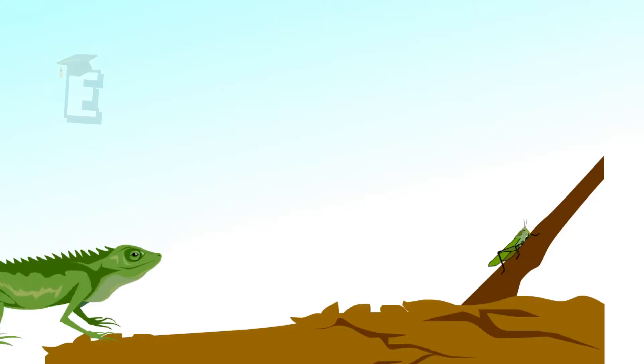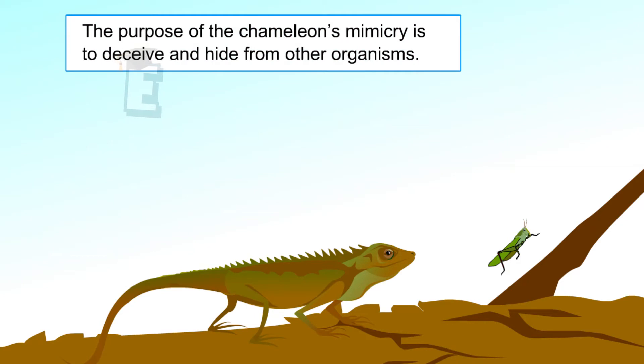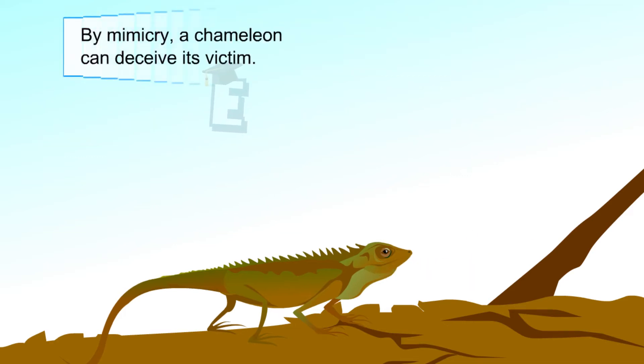However, it turns brown when it is on the soil. The chameleon takes advantage of its color alteration. For example, to deceive its prey. These prey do not realize the chameleon's presence, easing the chameleon to catch them.